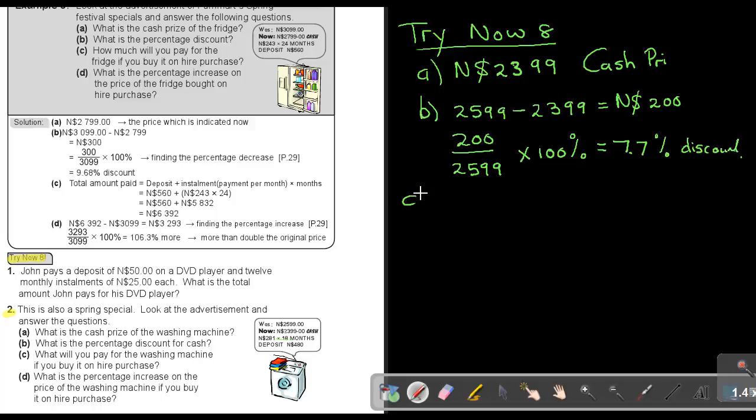Number C: What will you pay for the washing machine if you buy it on hire purchase? Remember, it's always the deposit plus the installment times the months. The deposit is $480.